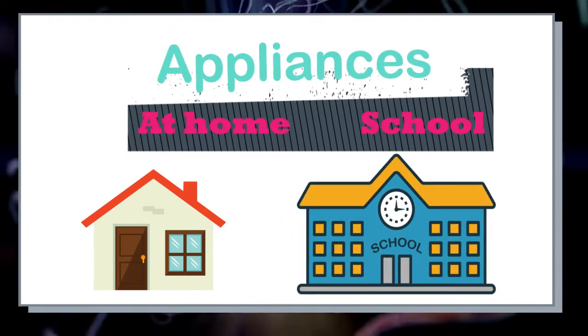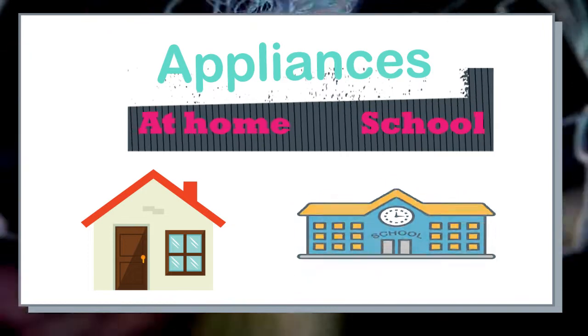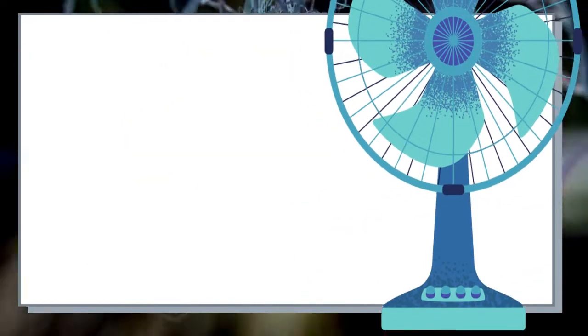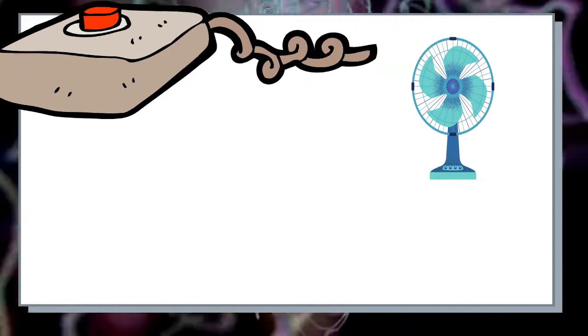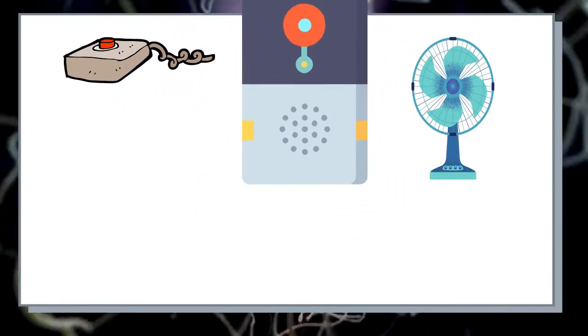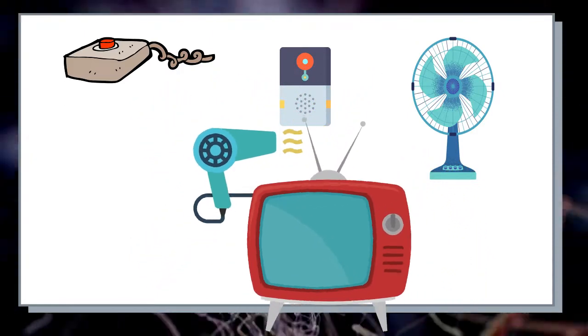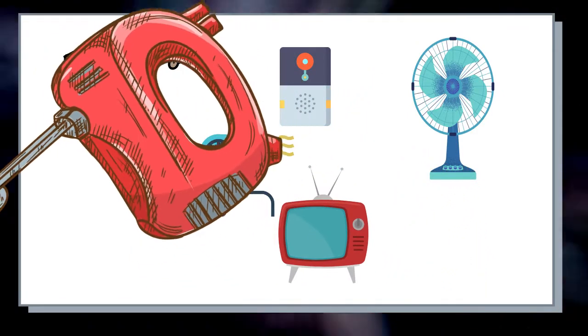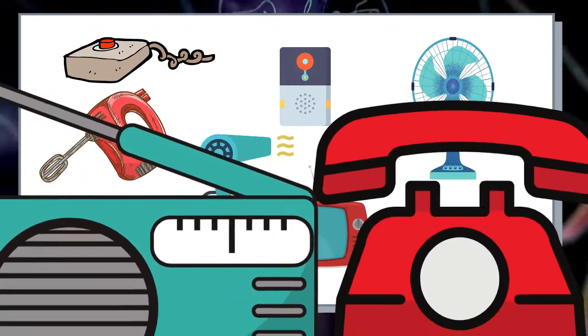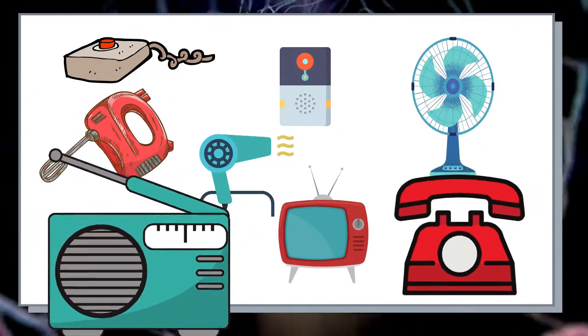Some of the appliances used at home and in school make use of electromagnets. Examples are electric fan, buzzer, doorbell, hair dryer, television, egg beater, telephone, and radio.